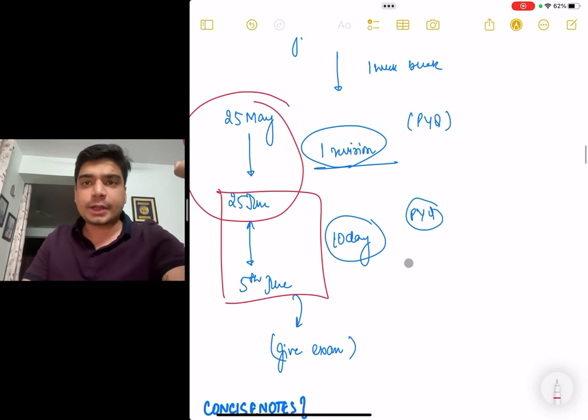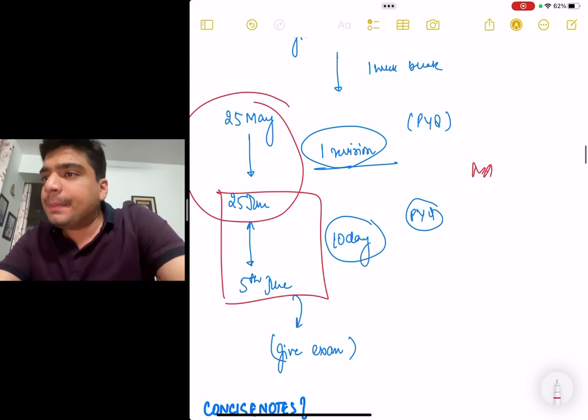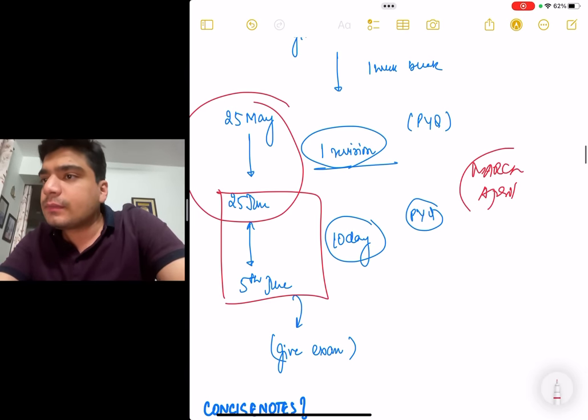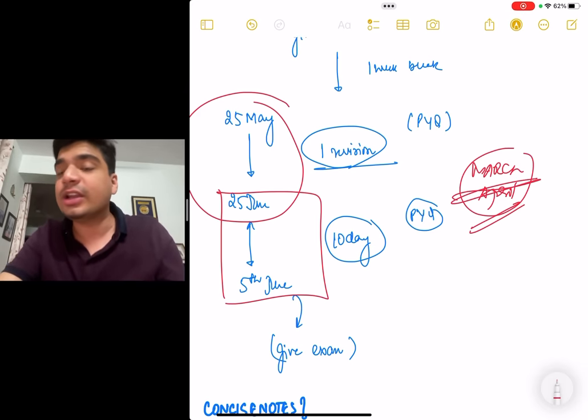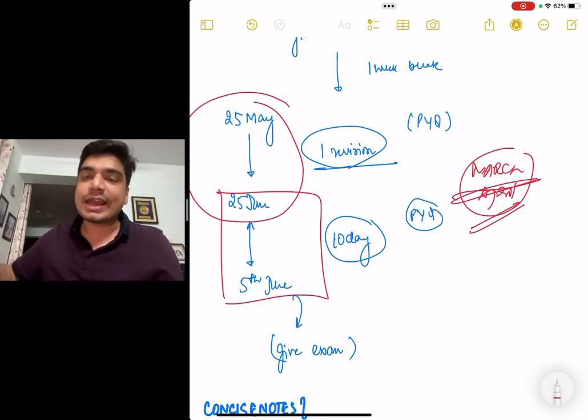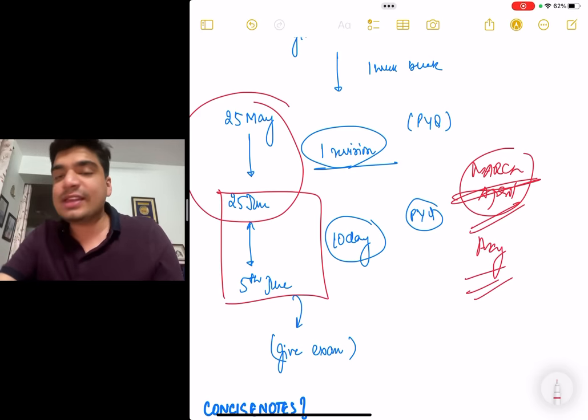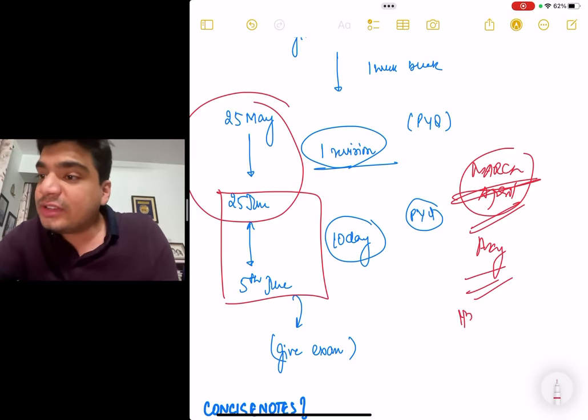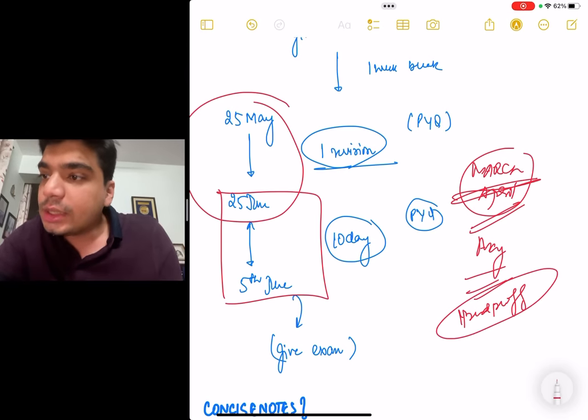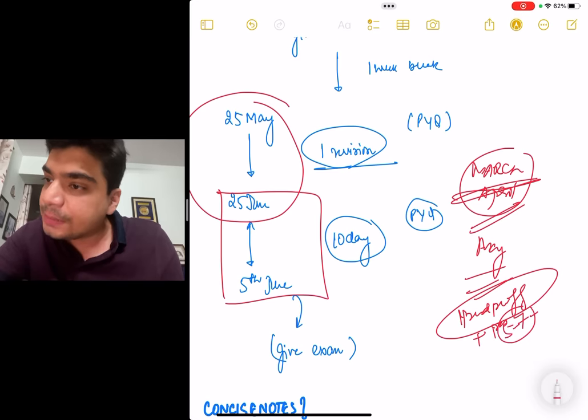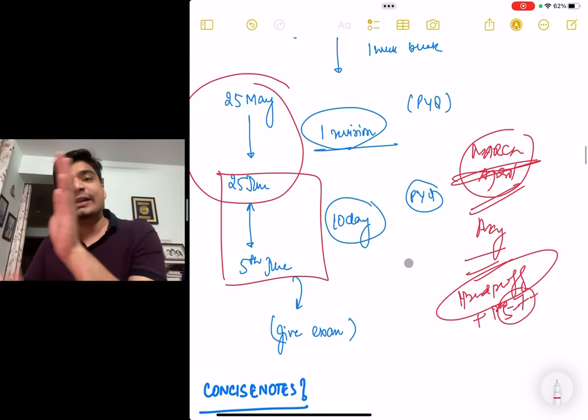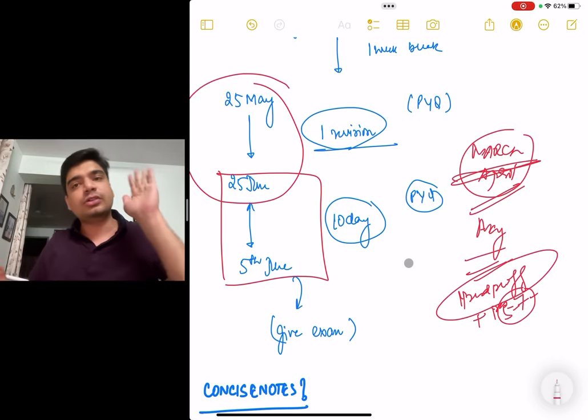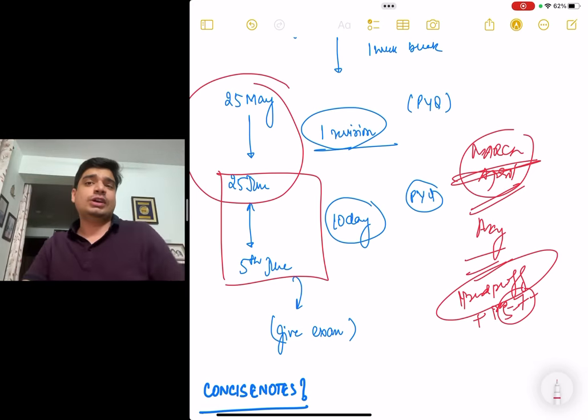After giving INI-CT, take one week break and from 25th May to 25th June, give one proper revision of these concise notes that you made and then from 25th June to 5th July in the next 10 days, do the last 10 day revision and then give the exam. You will definitely get a top 1000 rank. March and April, you make your concise notes. If somebody is already in the process, I would ask them to finish that by March end. Then keep on revising those concise notes again and again.